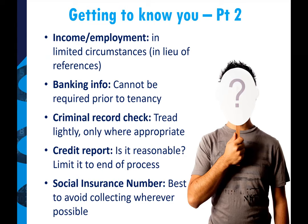On credit reports: you can certainly ask for consent to run a credit check on the application form. But we suggest you only run the credit report if you are actually going to offer a tenancy to the person, and only if there's still a reason to check their credit. If you're absolutely sure they have good credit, running a credit report would potentially be offside PIPA because it wouldn't be reasonable to collect that additional information. For the social insurance number, you're not prohibited from collecting it, but it's best to avoid it wherever possible because it's such sensitive information — and once you collect it, you are responsible for it. If there's a privacy breach, it could be quite intense to mitigate the harms.